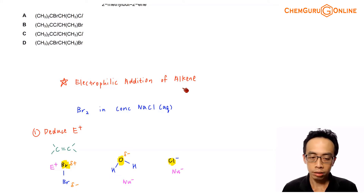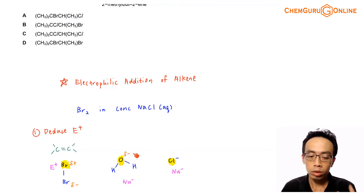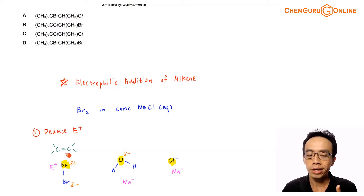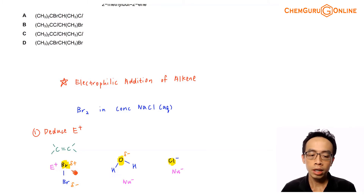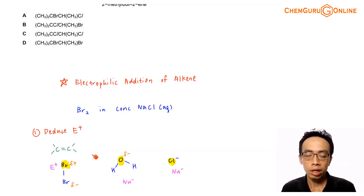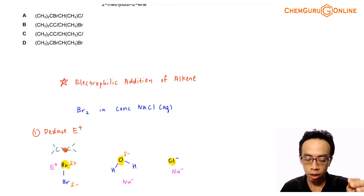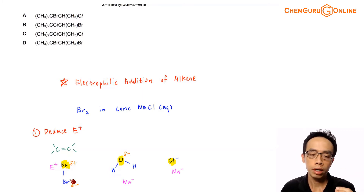We want to consider all the species present and decide which is the most likely electrophile. What is present: Br₂ will be there, water will be there because of the aqueous medium, and sodium chloride will also be there. First, let us consider bromine. Can Br₂ function as an electrophile? When the bromine molecule approaches the alkene, the bromine closer to the alkene will be partial positive and the one further away will be partial negative. So it is possible for bromine to function as the electrophile.